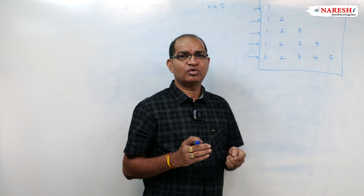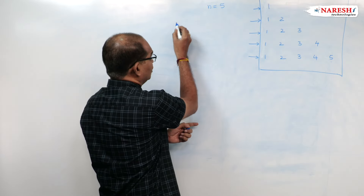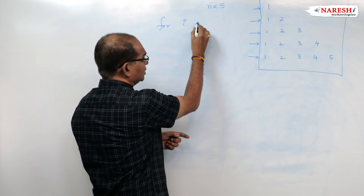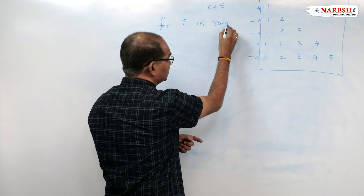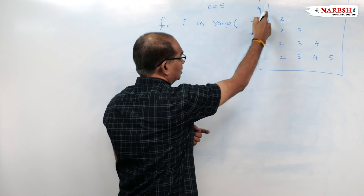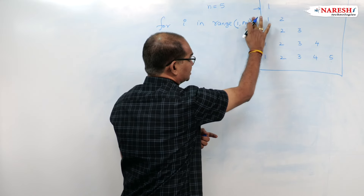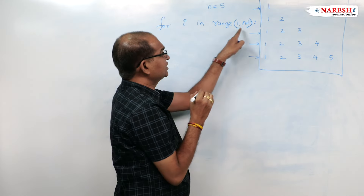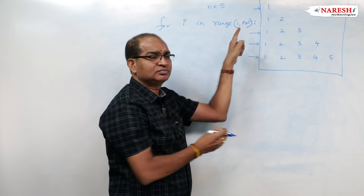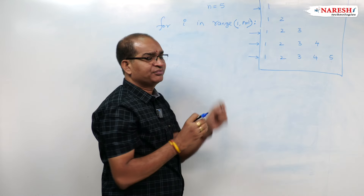Very simple. n is equal to 5. I will write one outer for loop: for i in range(1, n+1), that is 1 comma n plus 1, because I start with 1. When I say range(1, 6), it will give you values 1 to 5. When I write print(i), it will give you 1 to 5 coming out.